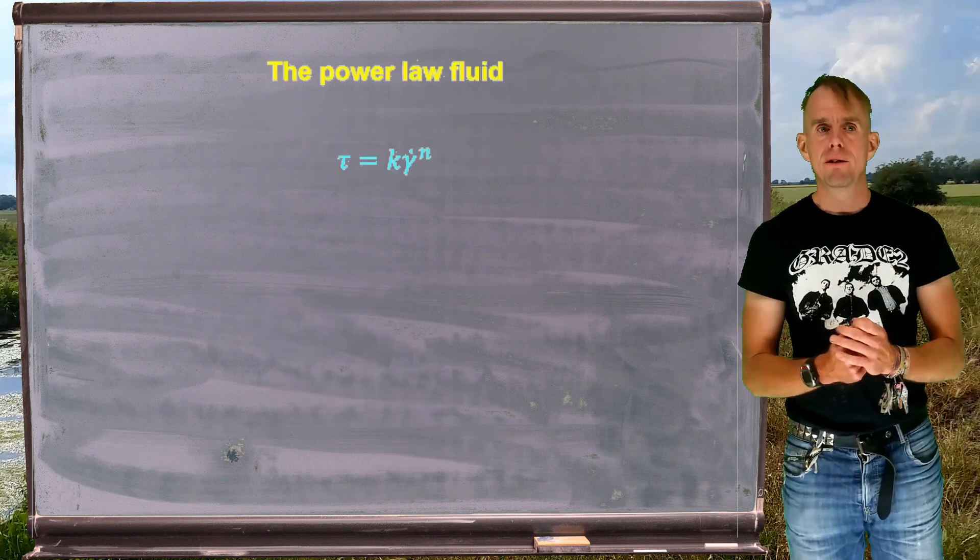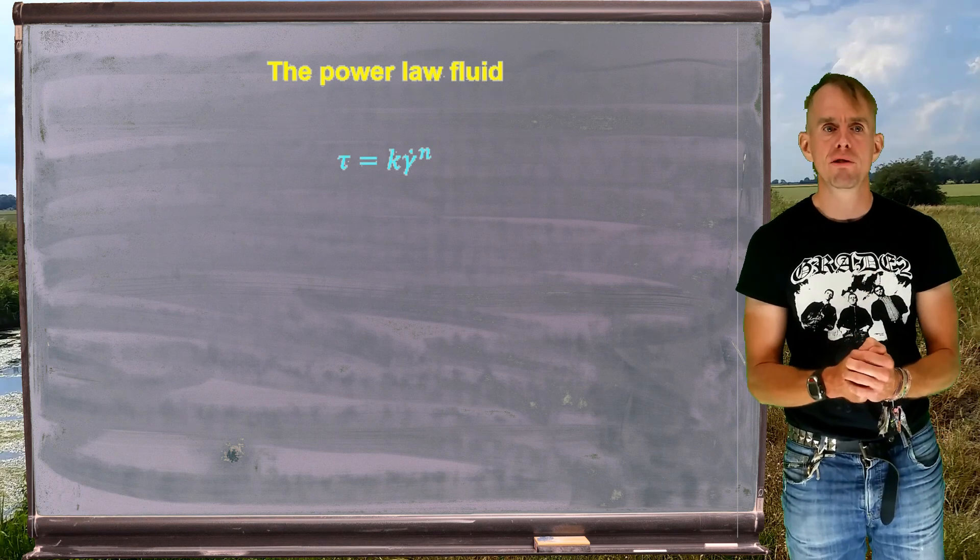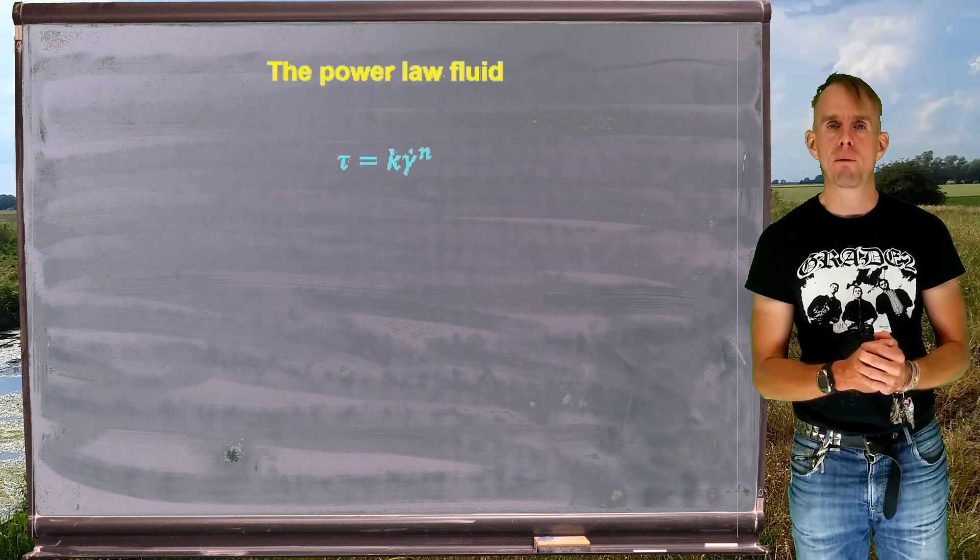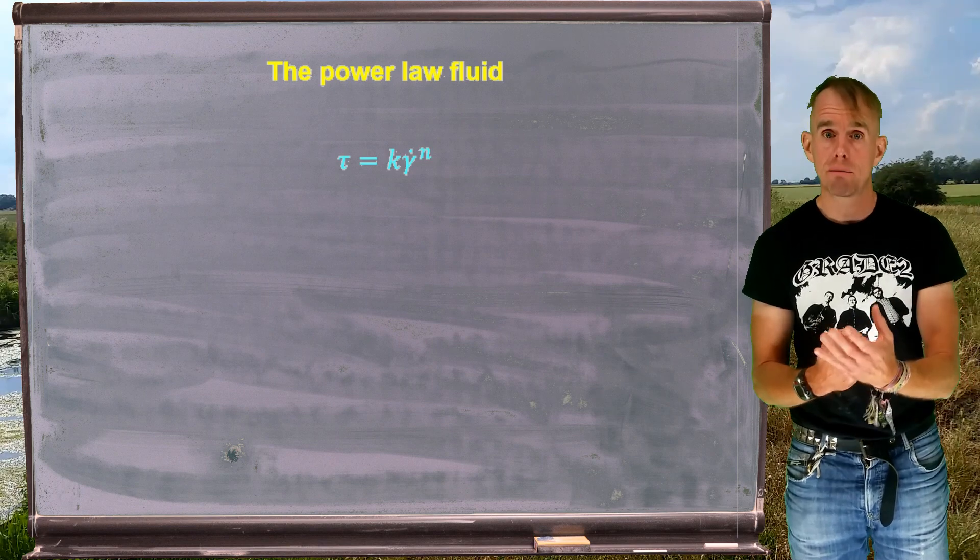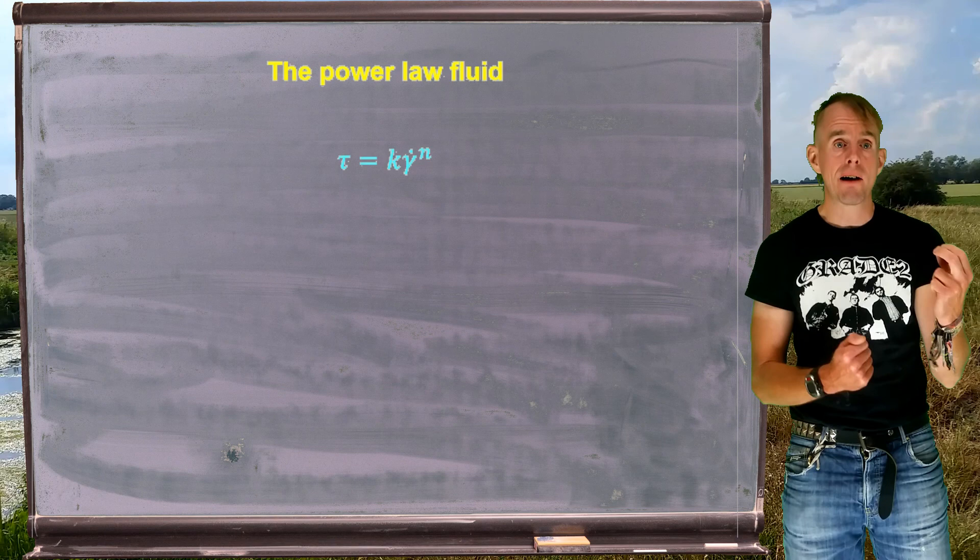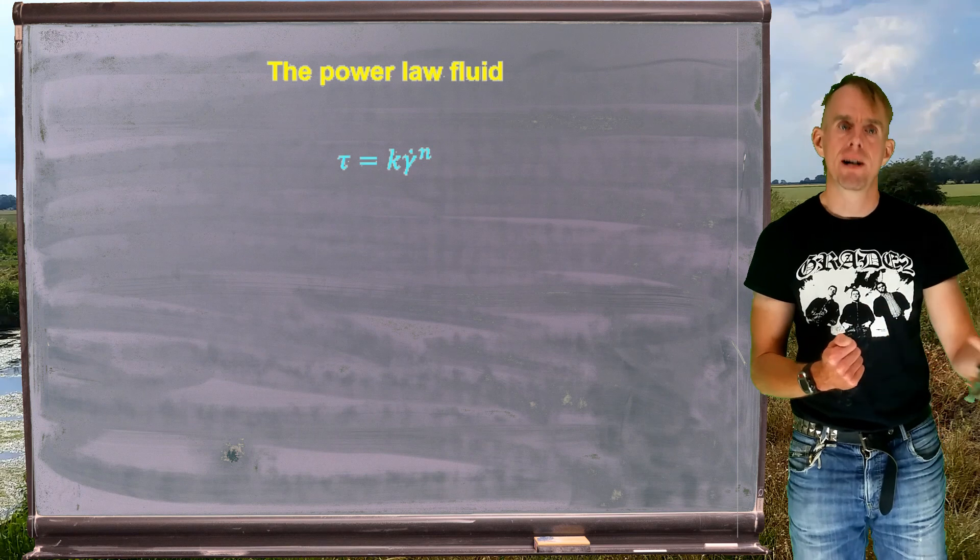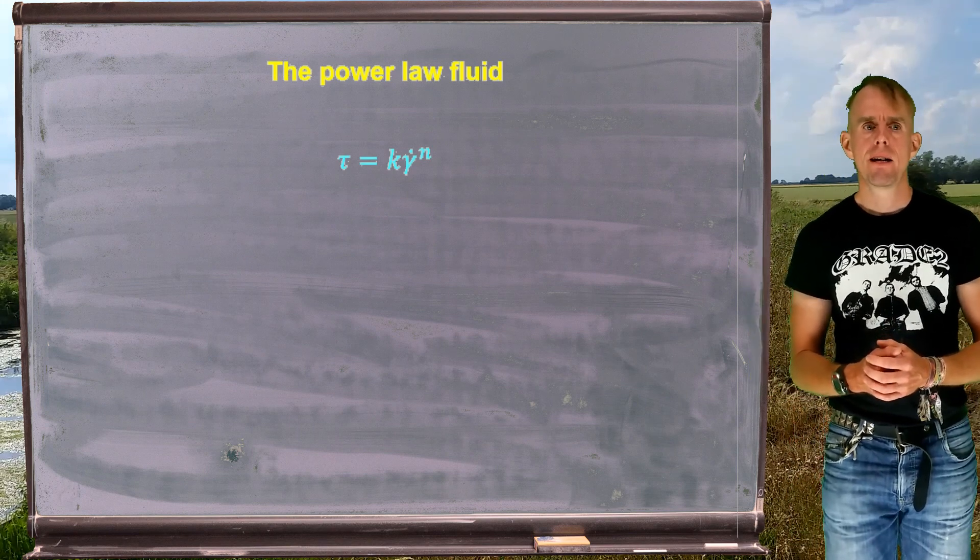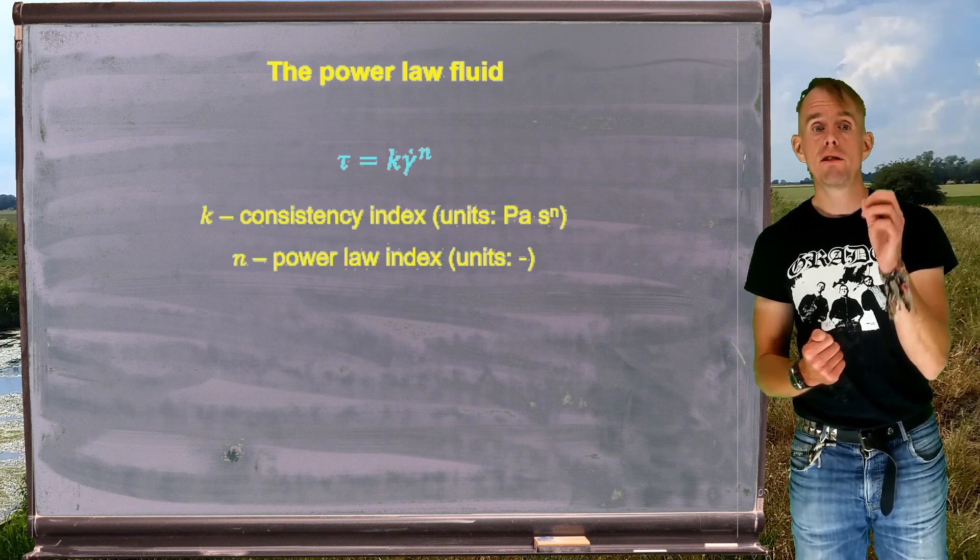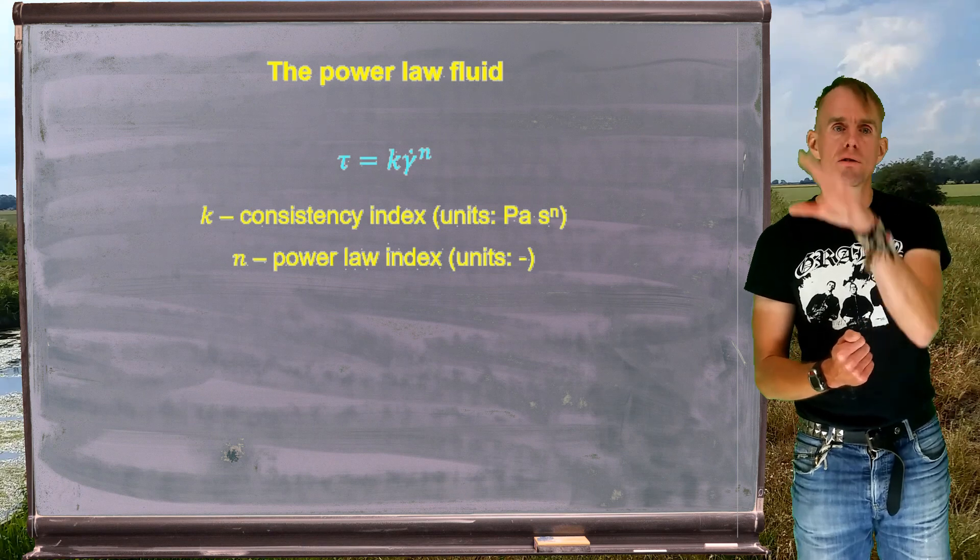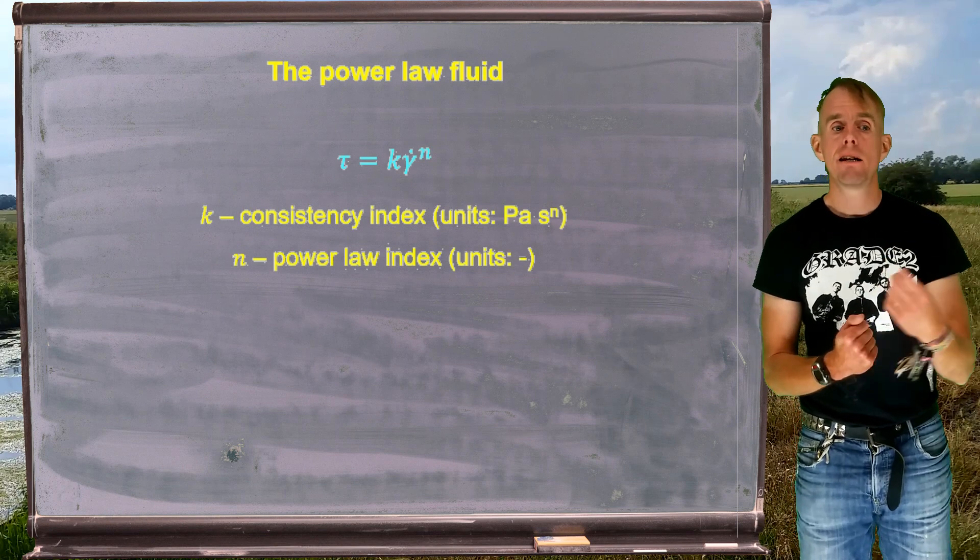So, let's now have a look at the simplest possible generalized Newtonian constitutive equation. So, on the board in front of you, you'll see the stress relationship for a power law fluid. Remember, for a Newtonian fluid, tau equals mu times gamma dot, where mu is constant. Now we have tau equals k times gamma dot to the power n, hence why this is called a power law fluid. Now, k is something that we call a consistency index. It's a constant. It takes units of Pascal seconds to the power n, because the shear rate measured in reciprocal seconds is raised to the power n. n is our power law index.